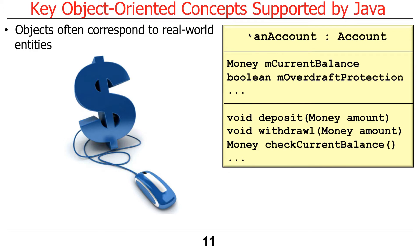Objects often, though not always, correspond to real-world things. That's kind of the appeal of an object-oriented approach — it's about modeling the real world. So if we were developing some kind of accounting or banking software, we'd have an account object with fields like the current balance and whether or not you've got overdraft protection set up, and then operations to add, withdraw, and check the balance.